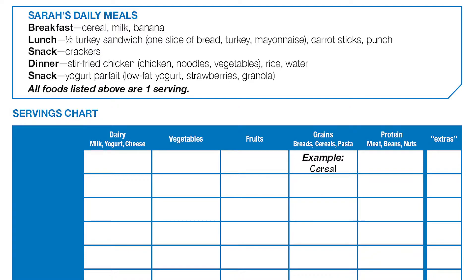She also had carrot sticks and punch. Where would we place the bread? What about the turkey and the mayonnaise? How about the carrot sticks and the punch? Remember, all of Sarah's items are for one serving. For a snack she had crackers — where would we write down crackers in the serving chart?